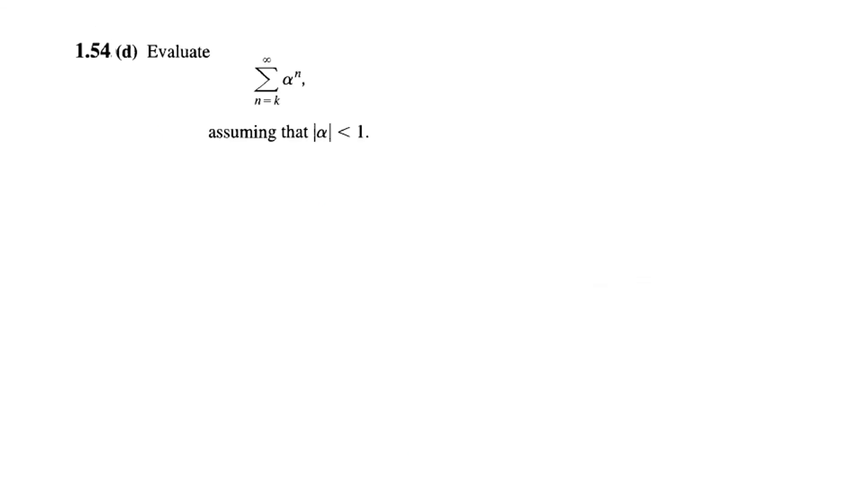And the last part, okay so this is the last part, we have to find the value of this one for alpha less than 1. Now what is new here is that we are starting from the limit n is equal to k. We have learned so far from n is equal to 0.